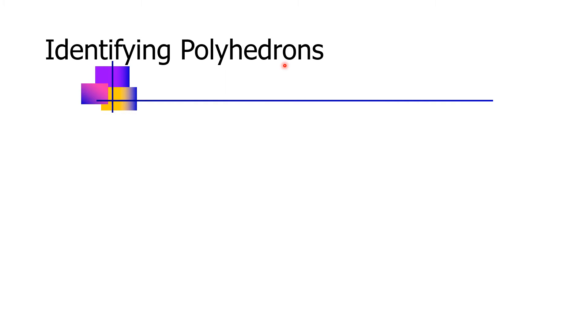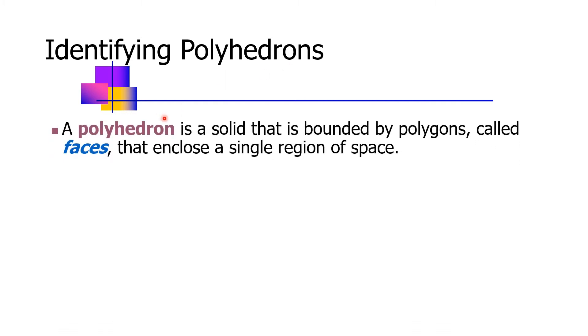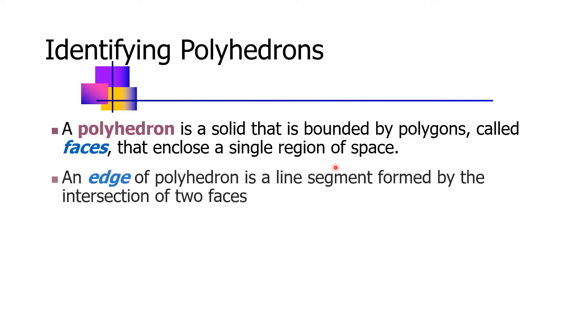Identifying polyhedrons: A polyhedron is a solid that is bounded by polygons called faces that enclose a single region of space. An edge of a polyhedron is a line segment formed by the intersection of two faces. A vertex of a polyhedron is a point where three or more edges meet.